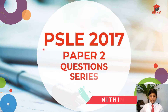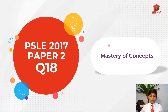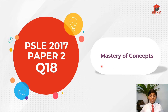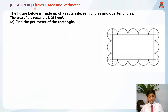Hi everybody, I'm Nitin and today in this PSLE 2017 Paper 2 question series I'll be going through question 18. This is the last question in this series. This question is testing us on circles, area, and perimeter.